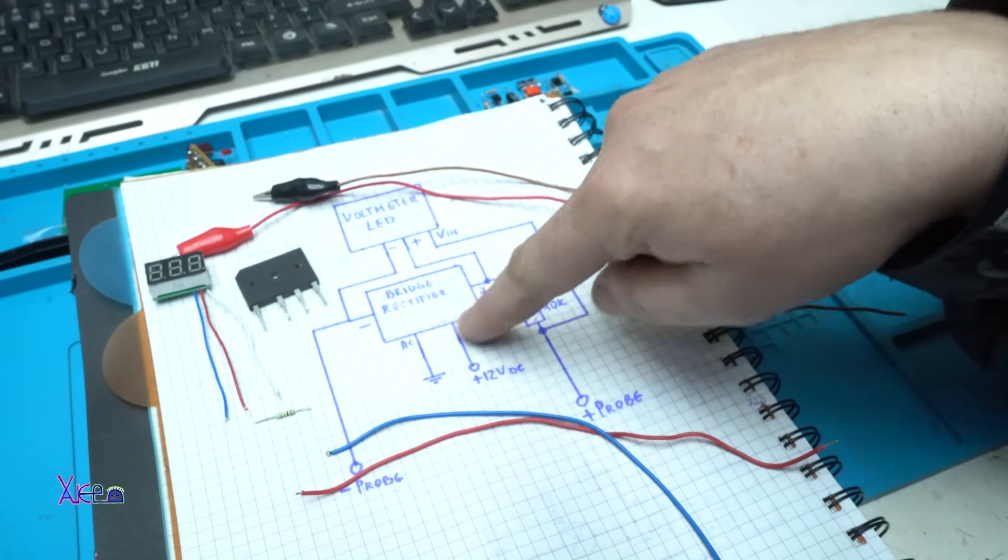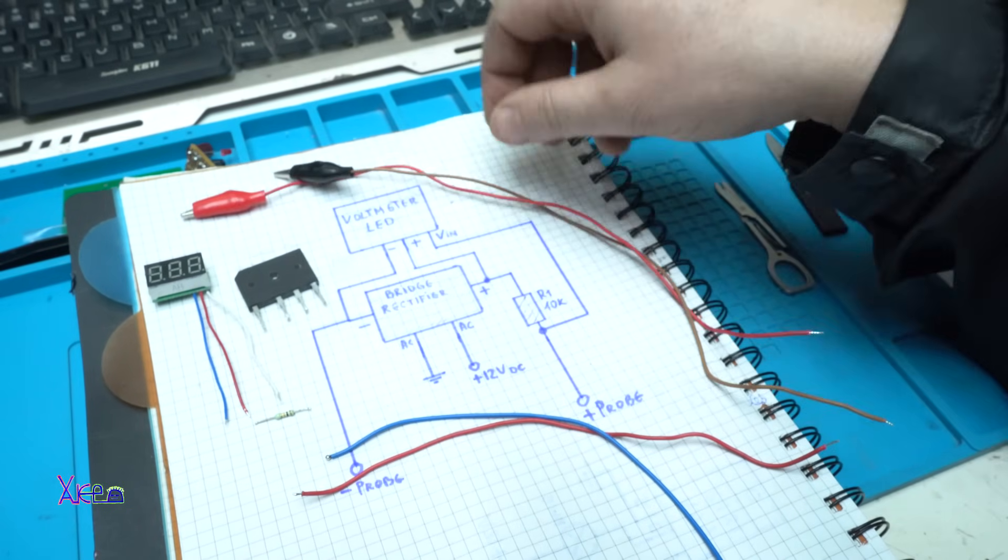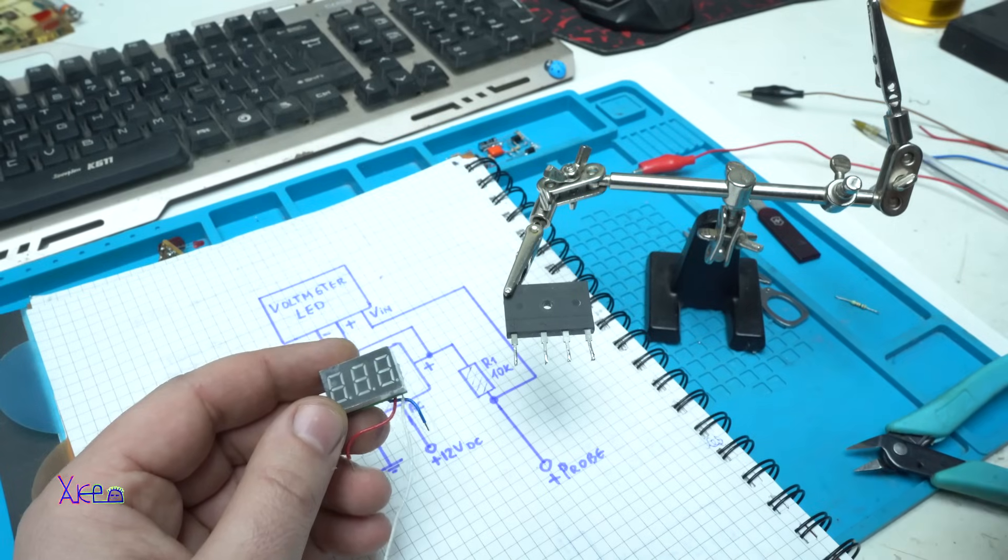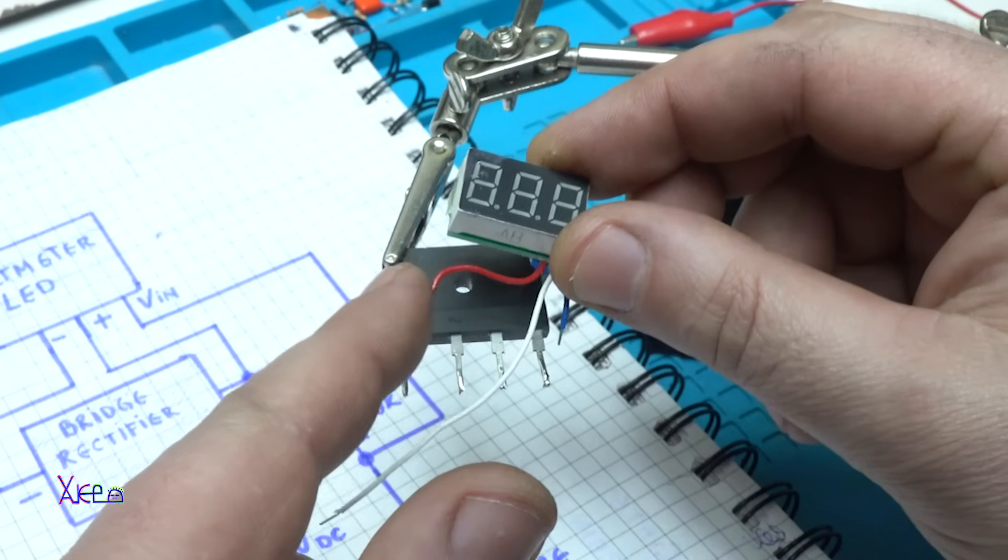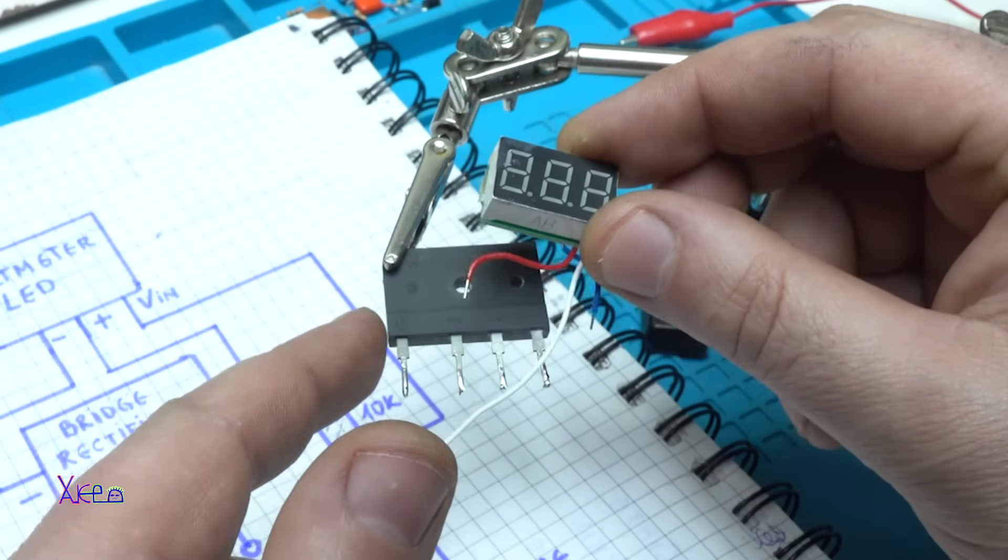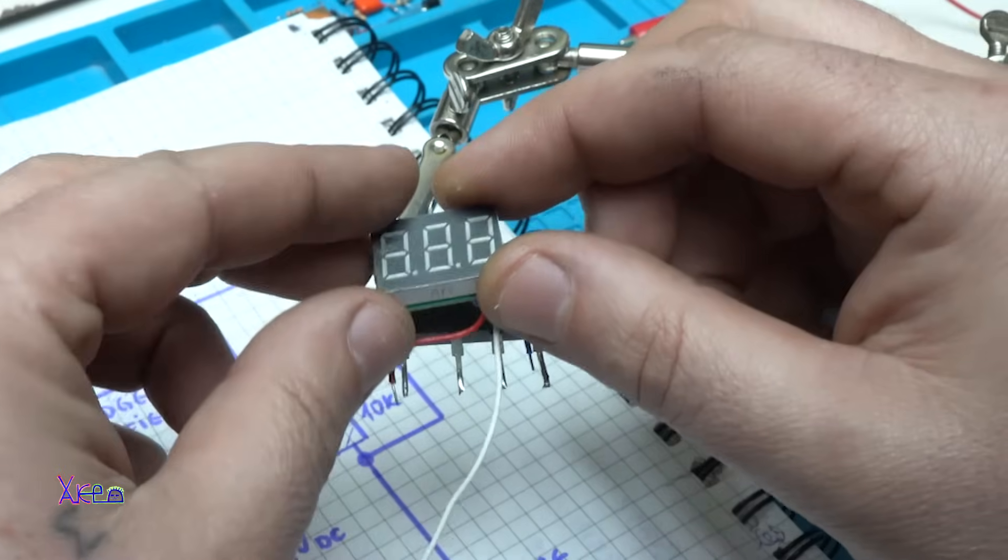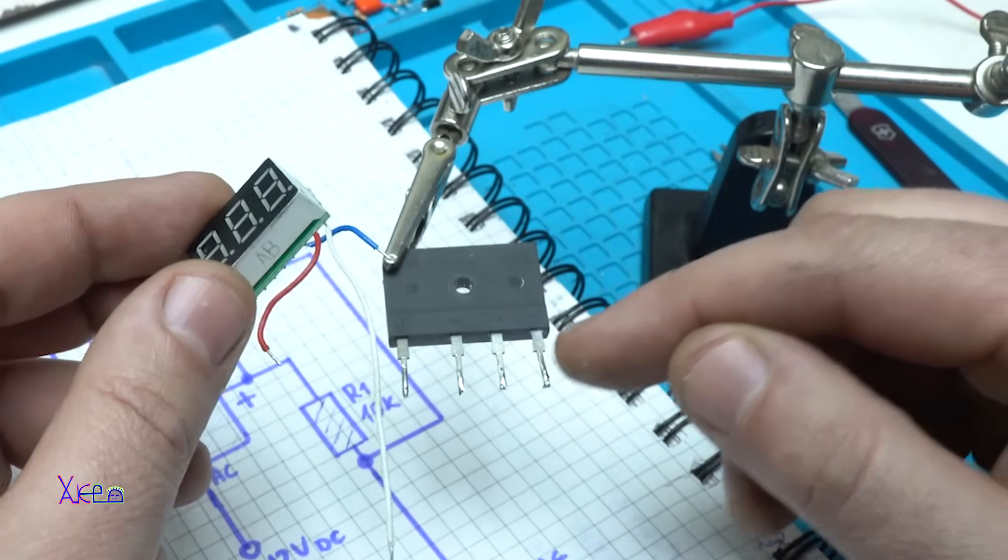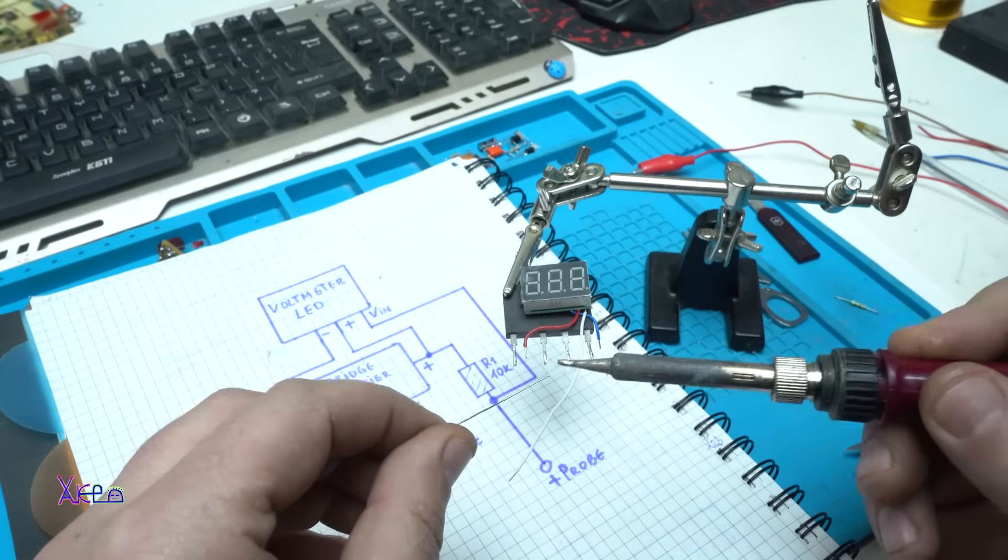...applying to the bridge rectifier right here. And these will be the probes. The first thing that I need to solder is the positive wire from the LED voltmeter goes to the positive leg of the bridge rectifier, and the negative goes to the negative leg of the bridge rectifier. Let's solder that first.